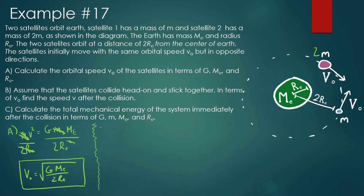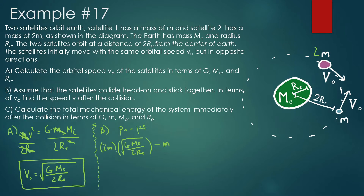Now, Part B says: assume that the satellites collide head-on and stick together; in terms of v_initial, find the speed v after the collision. Whenever you hear head-on collision, you should be thinking about momentum. We're trying to find the speed when they hit each other, not the angular speed. So we're going to do plain old momentum: momentum initial equals momentum final. At the very beginning we have the 2m satellite going with v_initial and the other satellite of mass m going in the exact opposite direction — at least one of them has to be negative.